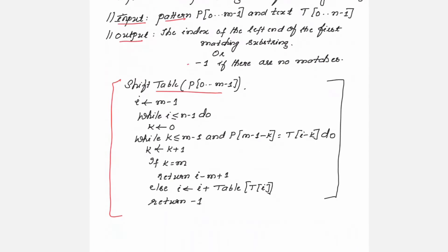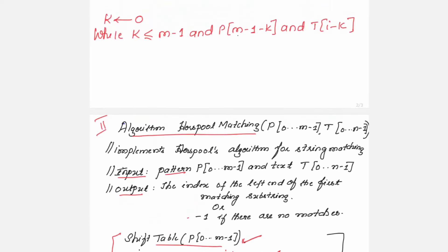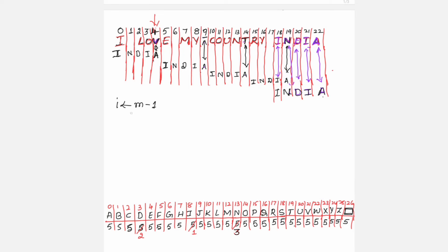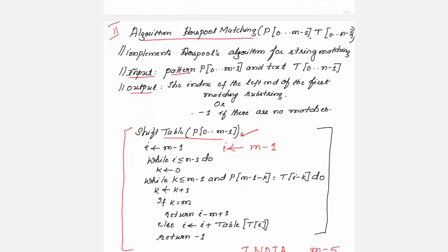This is the algorithm for Horspool matching. You are first going to call the shift table — without using the shift table it is not possible to complete the job. After the shift table call, i is initialized pointing to m minus 1. Here m is always the length of the pattern. Our pattern discussed in the previous session is 'India', which has 5 letters, so m equals 5 and m minus 1 equals 4. So i is initially pointing to index 4 in the text.